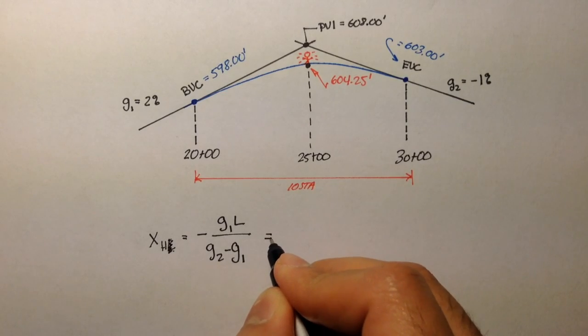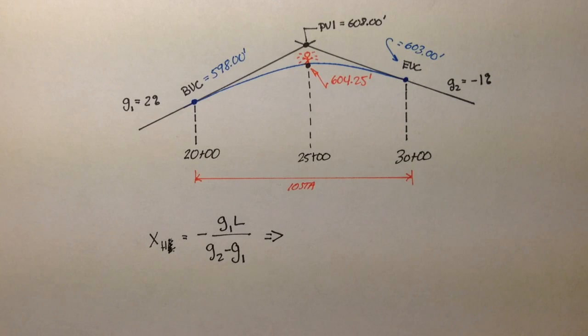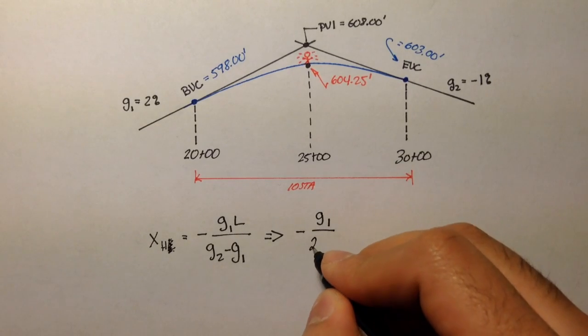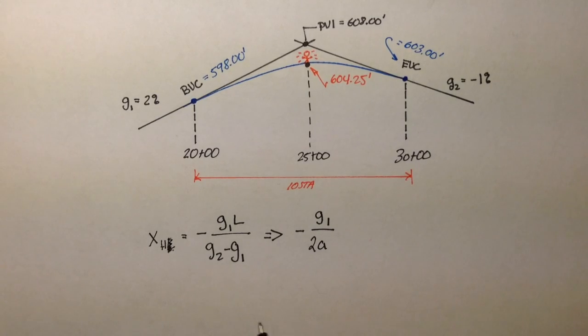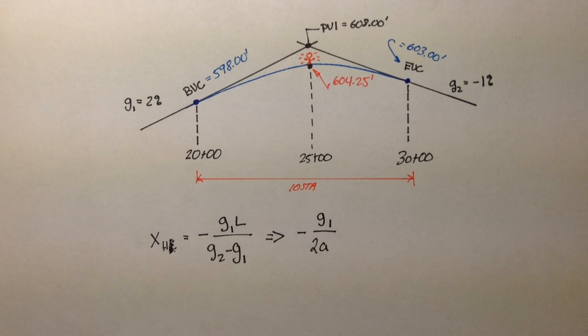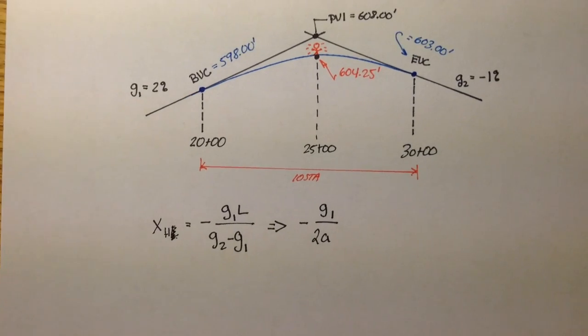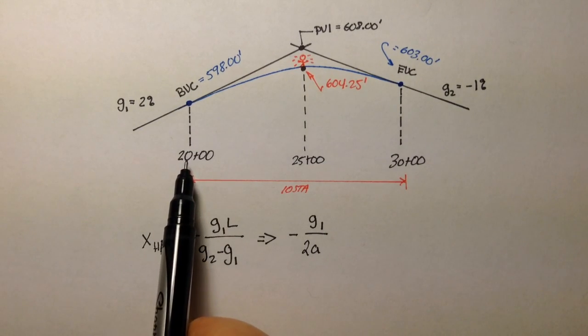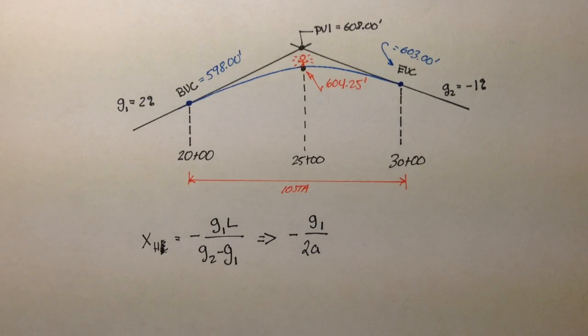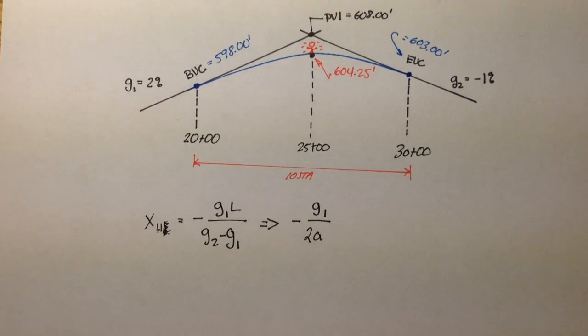And we also had another formula. We could also use negative g1 over 2a. So I'm going to solve for x using both of these equations to show you that you'll get the same result. Then we'll use that location of the highest point to find the elevation. This xh formula is only going to tell us where the location of this highest point is relative to the BVC.